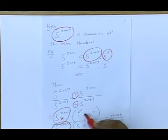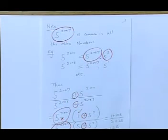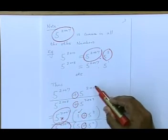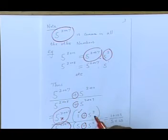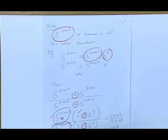You repeat those pluses because they're not cancelling, they're not disappearing, and you're dividing that back into the top and you'll find that you're left with 5 to the 3, and at the bottom 5 plus 5 squared.